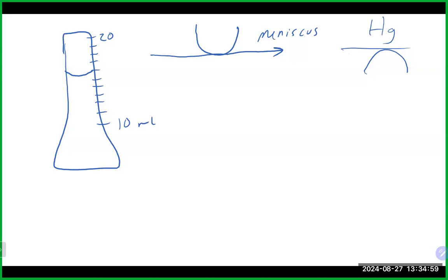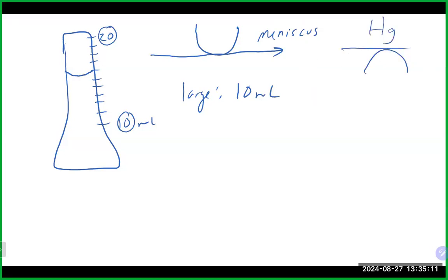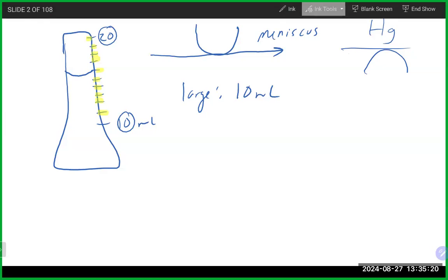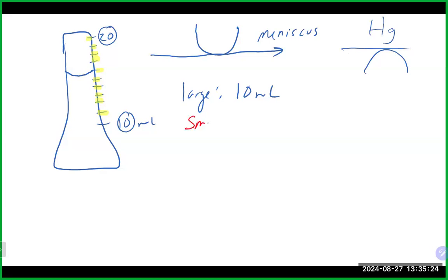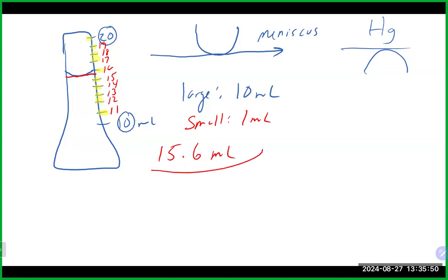So we do the same thing with this graduated cylinder. The large markings are 10 and 20, meaning the large marking interval is 10 milliliters. Looking at the small markings between, we count one through ten, so each small marking represents 1 milliliter. From the bottom of the meniscus, we can see it is at least 15, which is all of our certain numbers. Maybe I feel it's a little above half, so I record 15.6 milliliters — giving us three significant figures, where the uncertain number is the 0.6, meaning plus or minus 1 of that last digit.